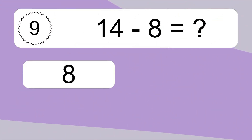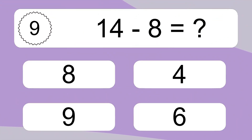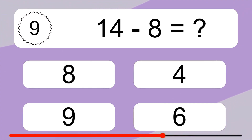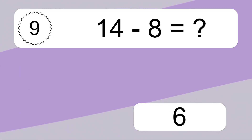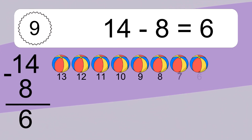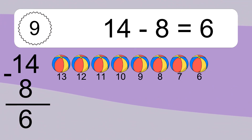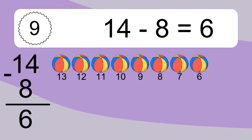14 minus 8 equals what? 14 minus 8 equals 6. Let's count it: 13, 12, 11, 10, 9, 8, 7, 6.